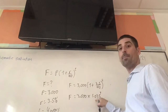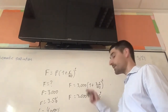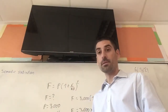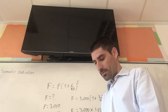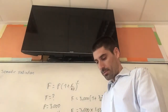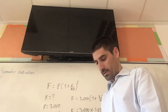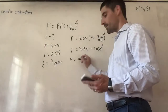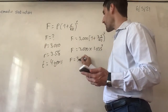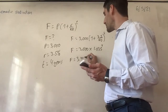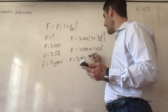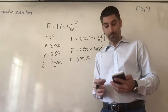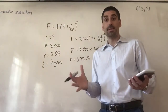You do one point zero three five to the power four, times three thousand. Working this out on the calculator, the answer — the future value — is three thousand four hundred and forty two point five seven. Round to two decimal places always, because we are dealing with money. And that is the most basic question.